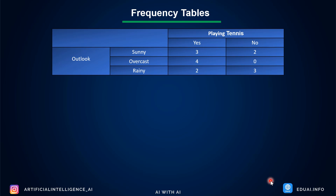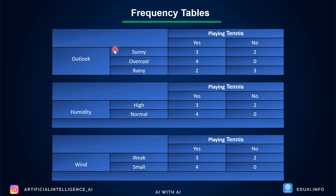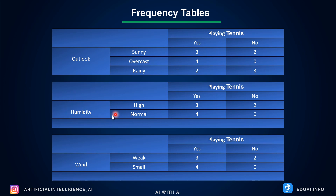To make it simpler, we convert the data into frequency tables — one for each column: outlook, humidity, and wind — showing how many times he played (yes or no). When outlook was sunny: played 3 times, didn't play 2 times. Overcast: always played (0 no). Rainy: played 2 times, didn't play 3 times. For humidity: high — played 3, normal — played 4. For wind: weak — played 3, didn't play 2; strong — played 4, didn't play 0.